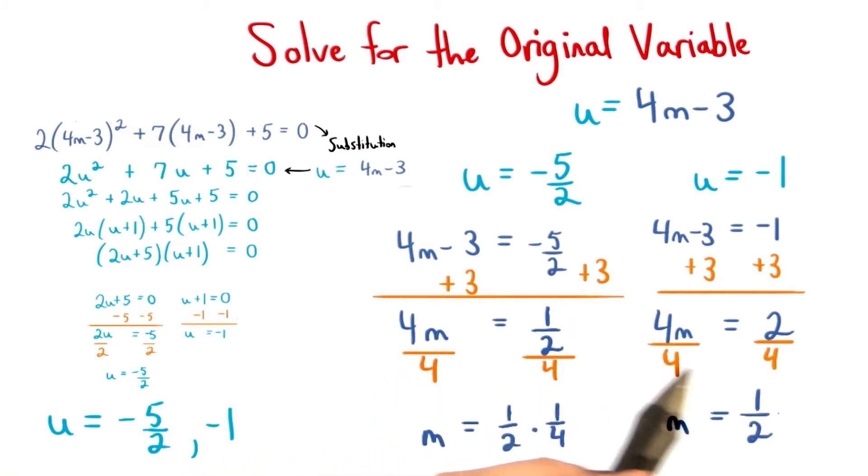Finally, we divide by 4 on both sides of the equations to get m is equal to 1 half times a fourth, and m is equal to 1 half.